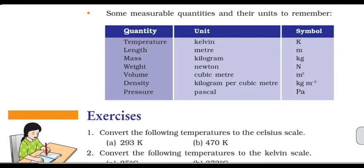Some measurable quantities and their units to remember. The basic unit of length is the meter. Mass is in kg. Weight is in N. Volume is m³. Density is kg per m³. Pressure is Pa — that's the basic unit.